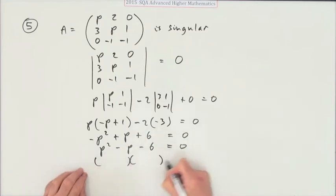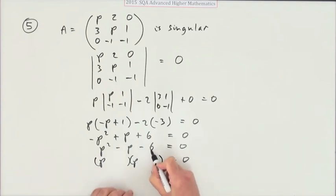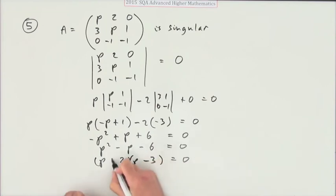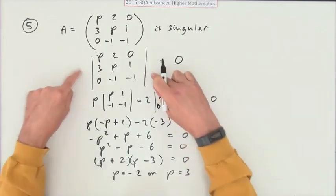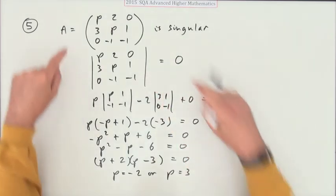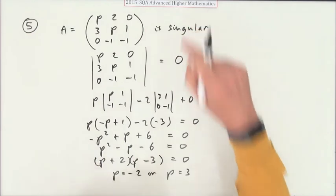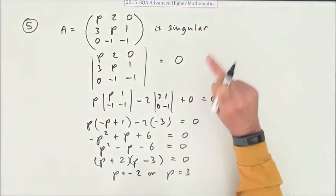2 and 3. The negative goes to the larger, so there we go: p is negative 2 or p is 3. That makes the determinant 0 and hence that matrix to be singular, meaning it's got no inverse.